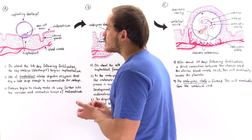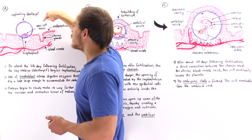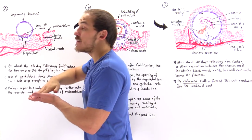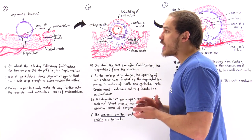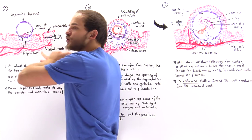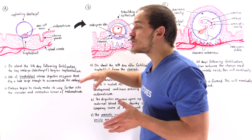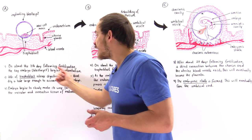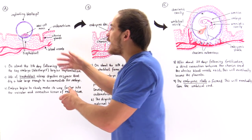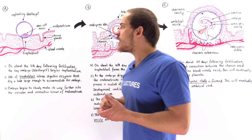The blastocyst implants itself along the section of the trophoblast that is adjacent to the inner cell mass, because the inner cell mass needs to be as close to the vascular tissue of the endometrium as possible — it is the inner cell mass that eventually gives rise to that organism. As soon as attachment takes place, the cells of the trophoblast begin to release digestive enzymes, which dig a hole inside the endometrium to accommodate the implanting embryo. Implantation takes place on about the seventh day following fertilization.